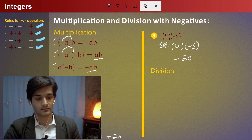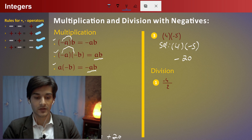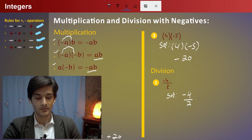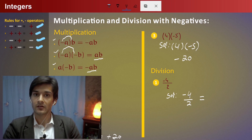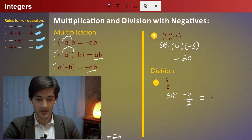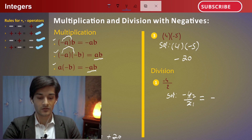Division example: minus four divided by two. The solution is minus four divided by two. It is a negative and positive integer. If the negative divided by positive equals minus sign, four divided by two is equal to two, so the answer is minus two.